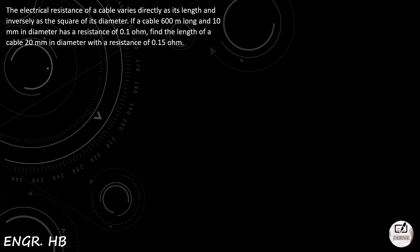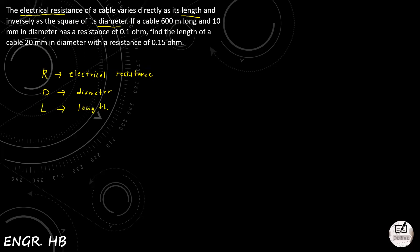So let us assign letters from the given situation. Let R be the electrical resistance, D for diameter, and L for length. Those are our three letters that will represent resistance, diameter, and length.